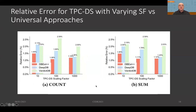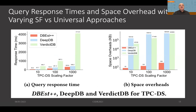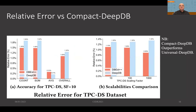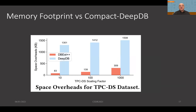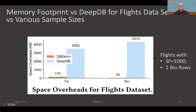Performance in relative error is improved by about 40–50%. Query processing time is about 50% better, while space overhead shows an improvement of several orders of magnitude — more than three orders of magnitude in this case. We also compared against the compact version of DeepDB, trained using only the attributes involved in a particular query template. DBS++ outperforms compact DeepDB, and notably the compact version of DeepDB outperforms the universal version — which is very promising for this approach. Memory footprint shows up to 120 times improvement compared to compact DeepDB, and similarly with the flight dataset of one billion rows, we see a large improvement in space overhead.